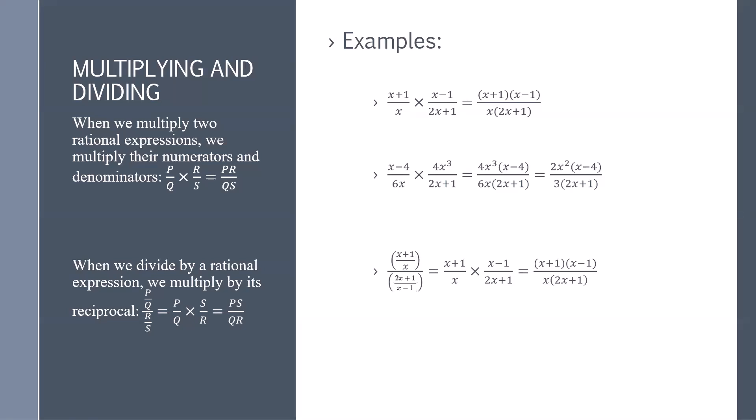Next, we have an expression x plus 1 over x divided by 2x plus 1 over 2x minus 1. Here we flip and multiply the denominator. So we have x plus 1 over x times x minus 1 divided by 2x plus 1, giving x plus 1 times x minus 1 divided by x times 2x plus 1.